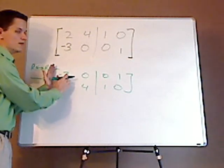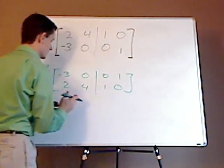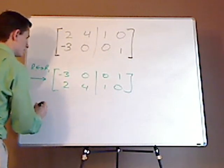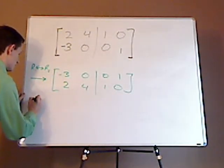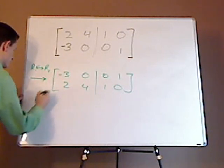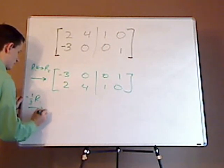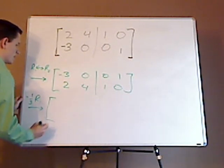Alright, what I'm going to do next is I'm going to make this one. If I make it one, all these things are a lot easier. So, I'm going to take row one and then multiply it by a negative one third.